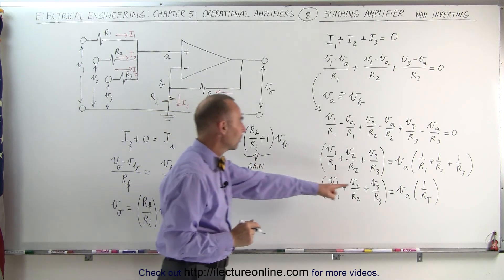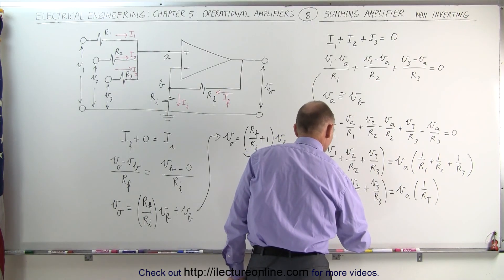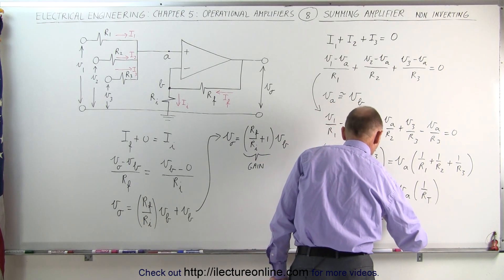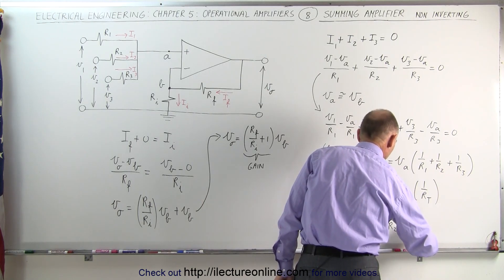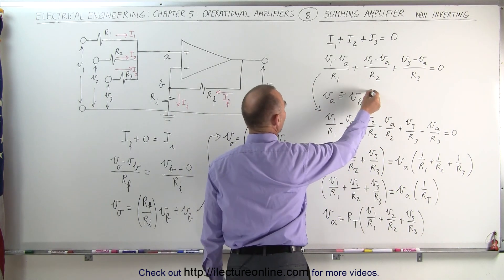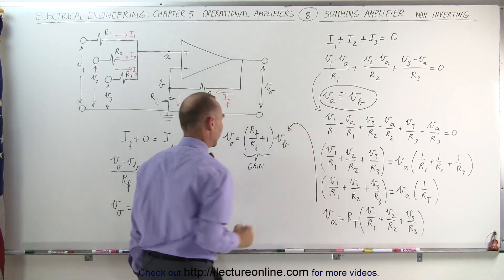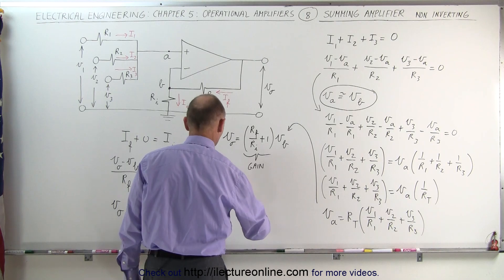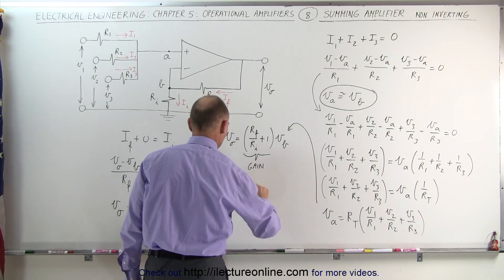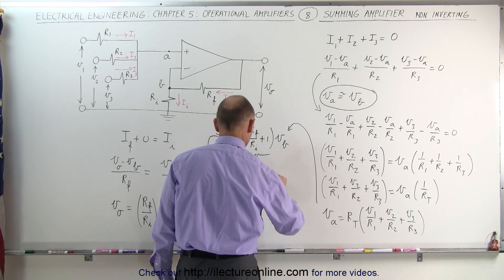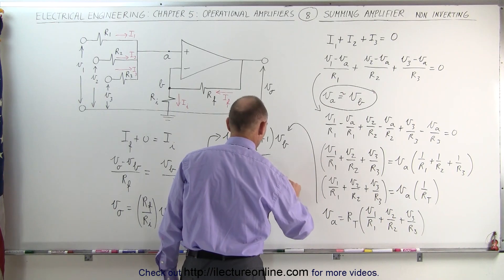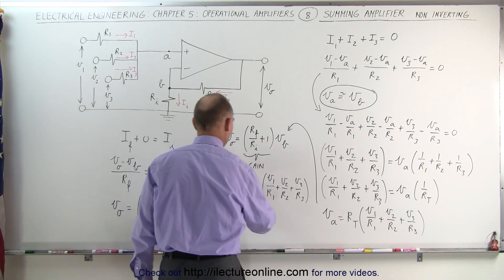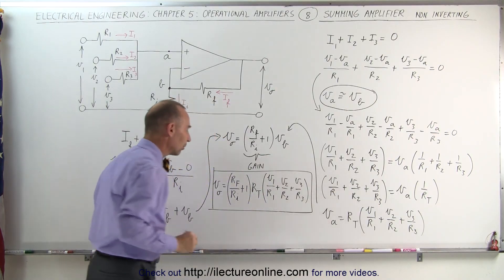Finally, solving this for V sub A by moving R total up gives: V sub A is equal to R total times V sub 1 over R1, plus V sub 2 over R2, plus V sub 3 over R3. Realizing that V sub A is approximately equal to V sub B, we can plug that in. The output voltage V sub O is equal to the gain — R sub F over R sub I plus 1 — times V sub B, which is R total times V1 over R1, plus V2 over R2, plus V3 over R3. That is the output voltage relative to the three input voltages, multiplied by the gain.